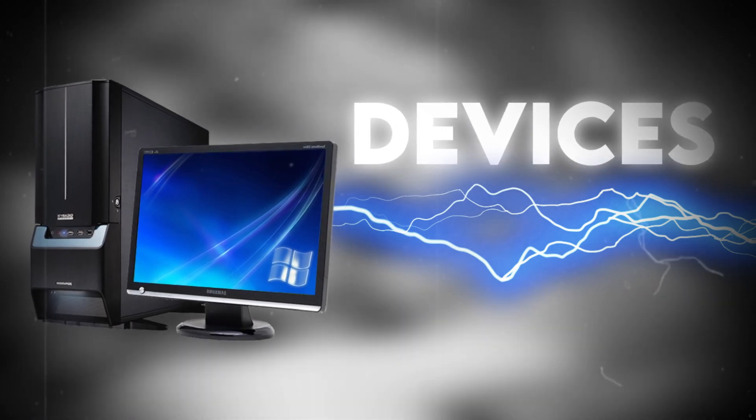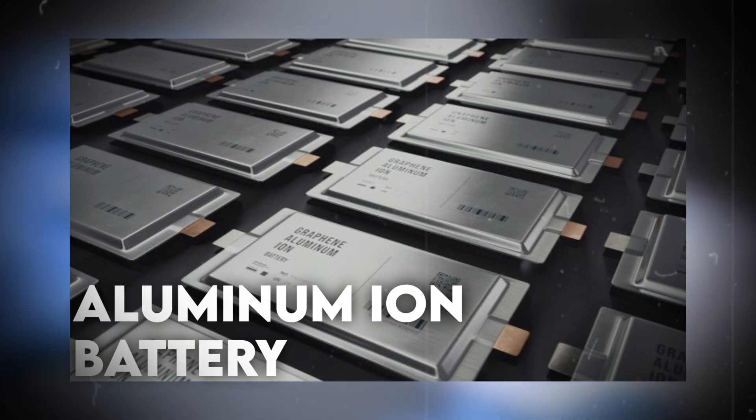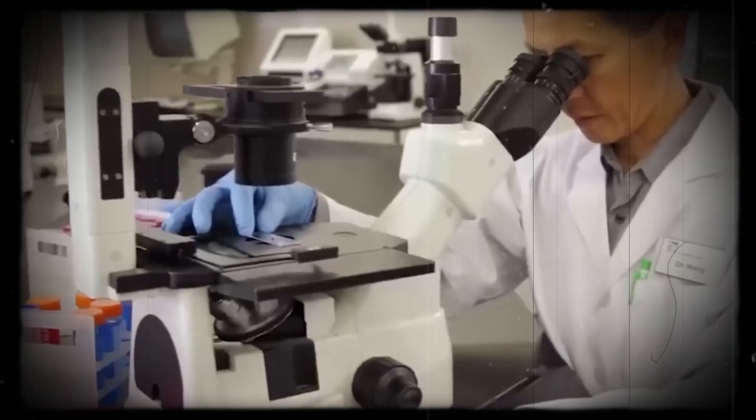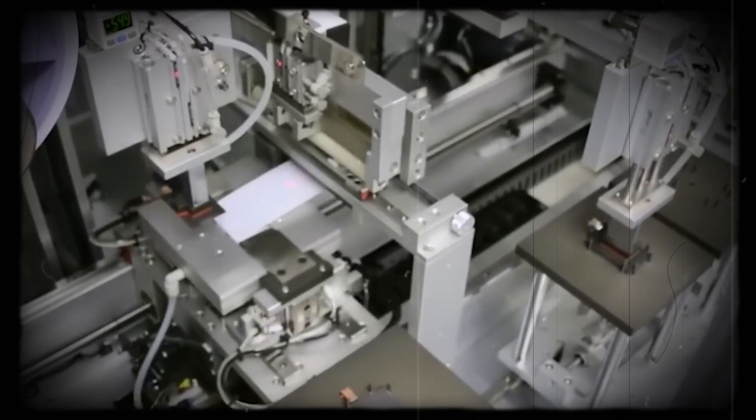What if there was a better way to power our devices than with the batteries we use now? Meet the new aluminum ion battery. Scientists are asking, could aluminum be the key to a longer lasting, more efficient battery? Let's find out together.